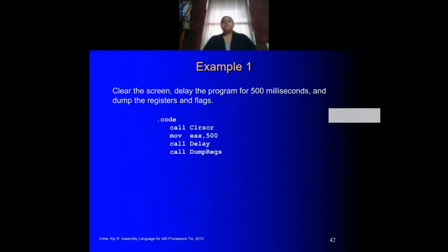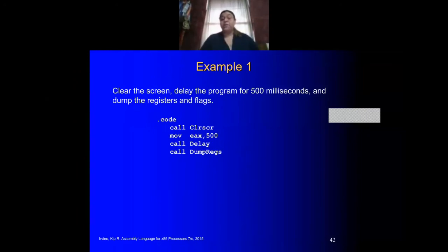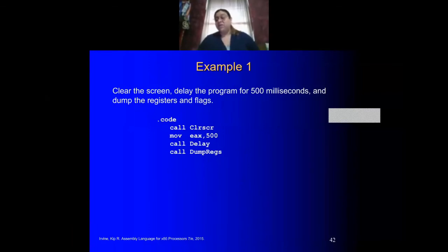Here's one example. Notice that the include Irvine32.inc is not shown here, but you need to have it, otherwise it will not work. Here you're clearing the screen and then you have a delay of 500 milliseconds. So the code clears the screen, then moves 500 into EAX, and calls a procedure inside the Irvine32 library that delays for 500 milliseconds. Then it calls the next procedure that will show you all the registers used — in this case, EAX will have 500.